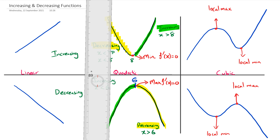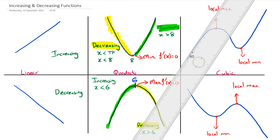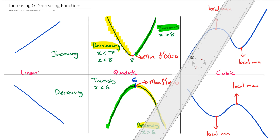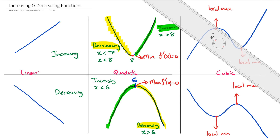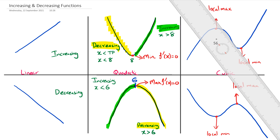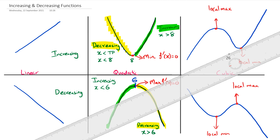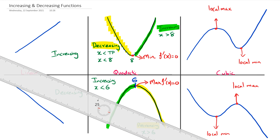If we take the ruler to the left side of the cubic, it's actually positive — it's increasing. Then between the two maximum and minimum points, the function is actually decreasing. Then after the local minimum, the gradient is positive again, so the function is increasing both here on the left and after the local minimum point.